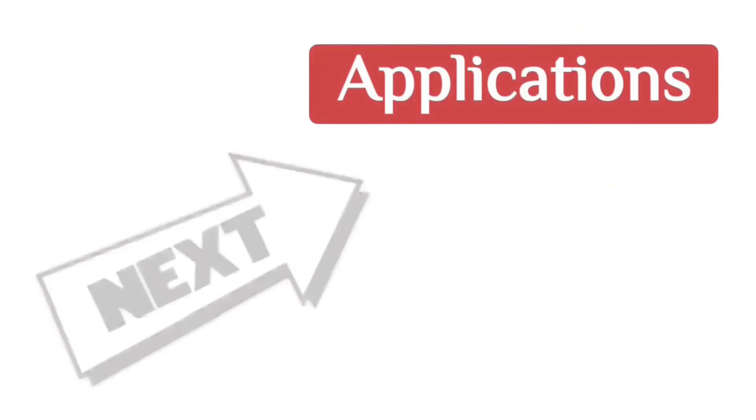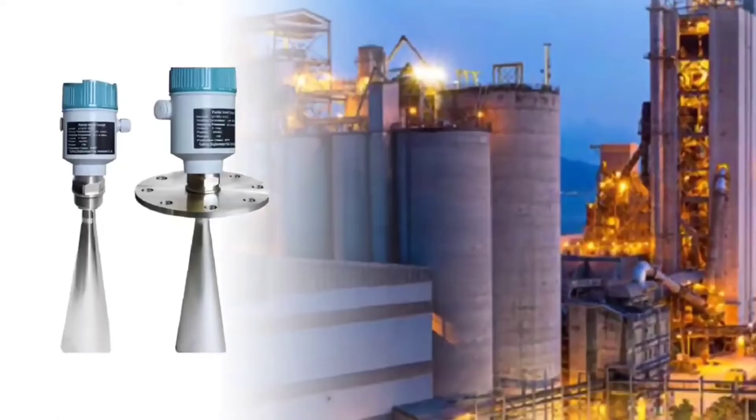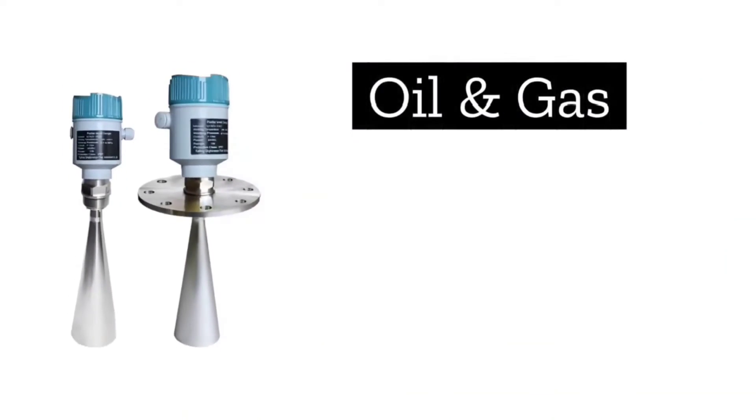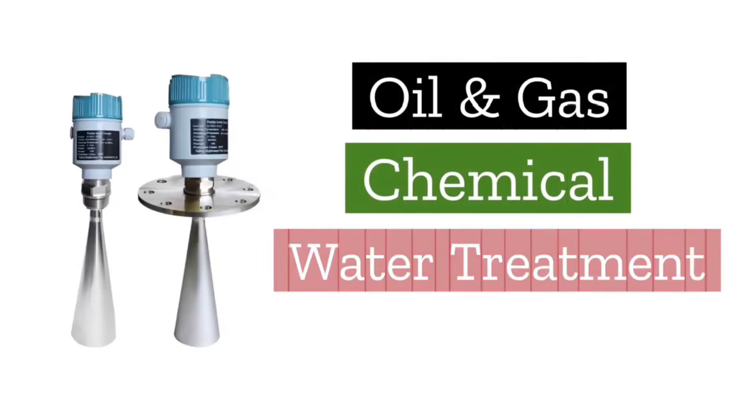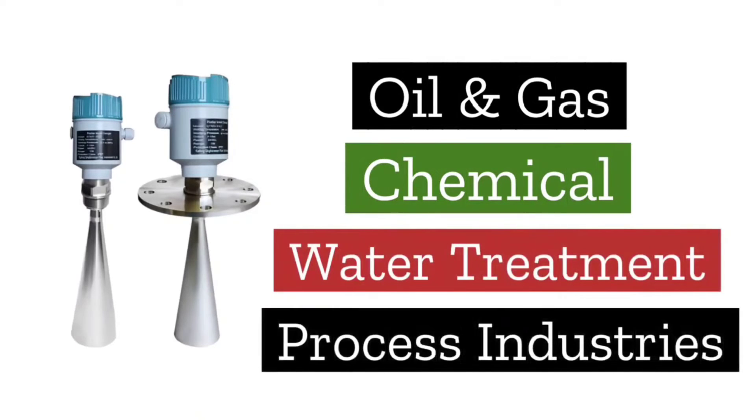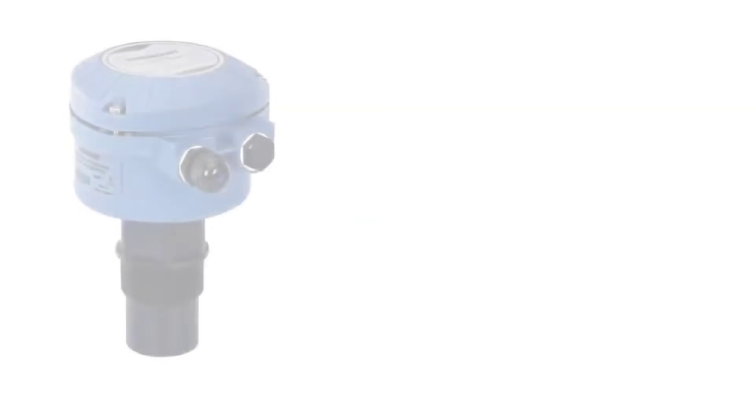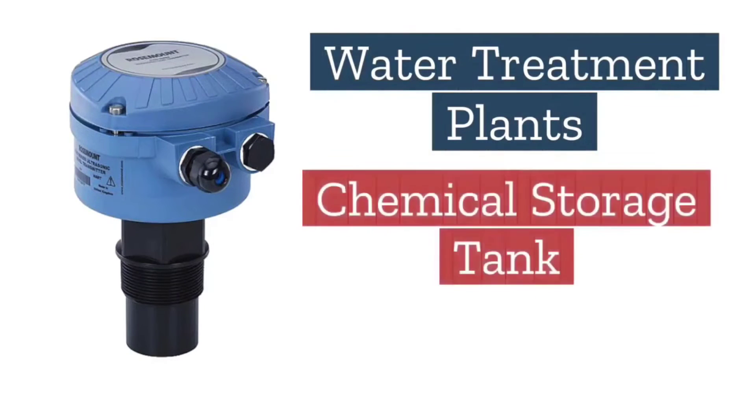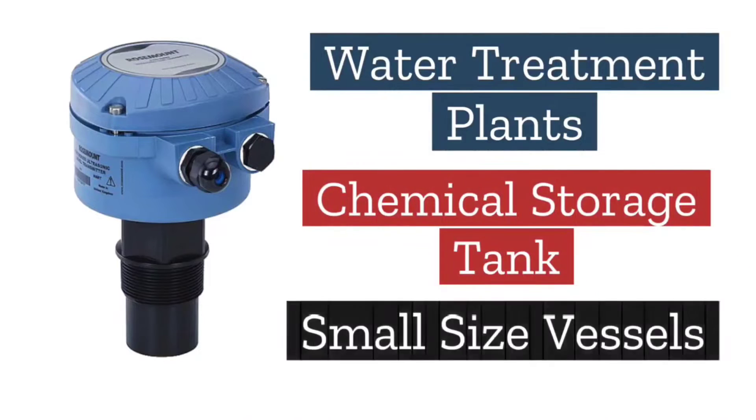Next is applications. Radar level transmitters are used in various industries such as in the oil and gas, chemical, water treatment, and in process industries. Usually ultrasonic level transmitters are used in water treatment plant, chemical storage tanks, and in small size vessels.